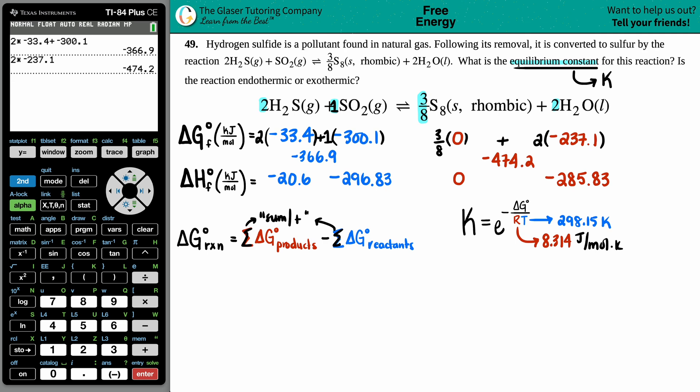Now I have my two values for reactants and products. ΔG for the whole entire reaction is the sum of the products, which was -474.2, minus the reactants -366.9. We get -107.3. Units here are in kilojoules because the units in the back of the text are kilojoules per mole, but the coefficients are moles, so moles cancel out and you're just left with kilojoules.